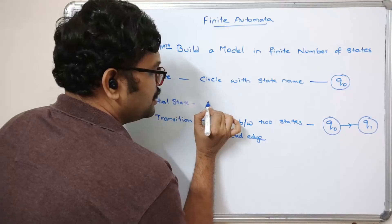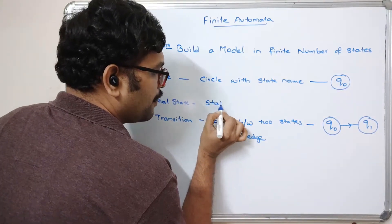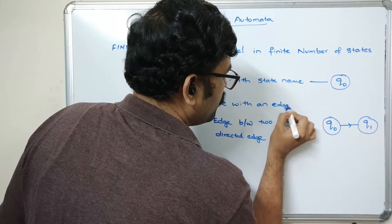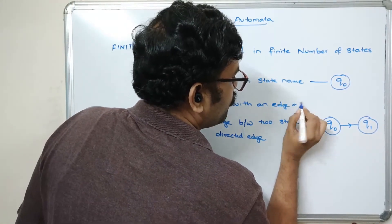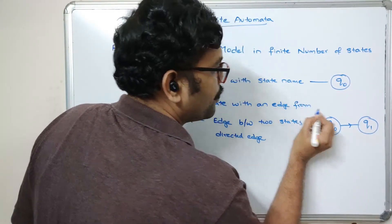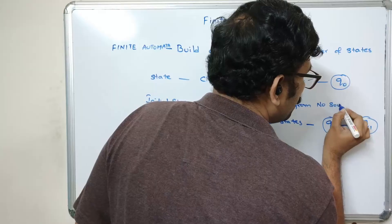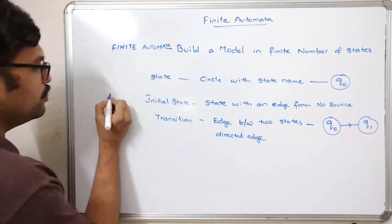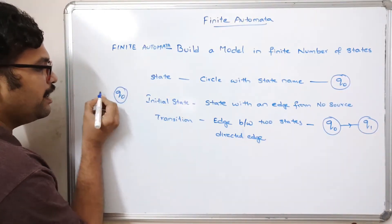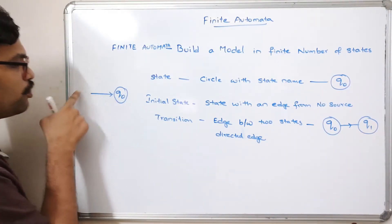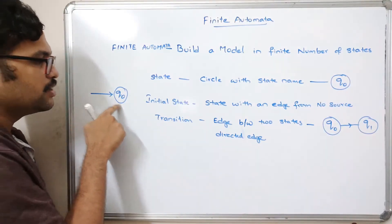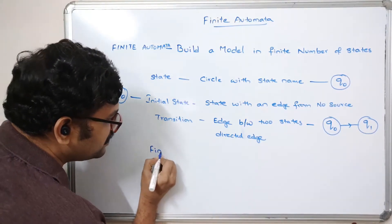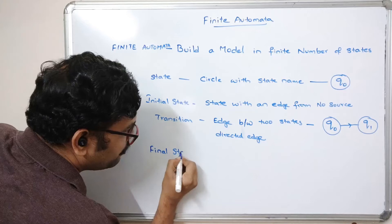An initial state is a state with an edge from no source — there will be no source, but there will be an edge. For example, consider Q-naught: if there is an edge without a source, that is called the initial state.